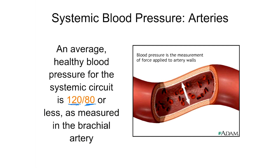The systolic pressure is the higher pressure when the heart is actively contracting; the diastolic pressure is the lower pressure when the heart is relaxed, maintained primarily due to vessel recoil. It's really important that we have pressure during diastole because it ensures blood keeps moving continuously through the vessels of the body.